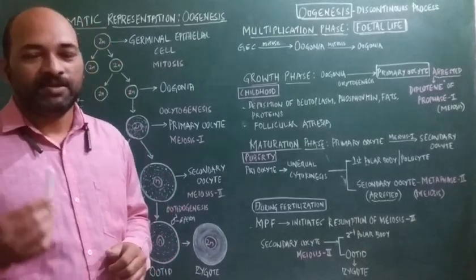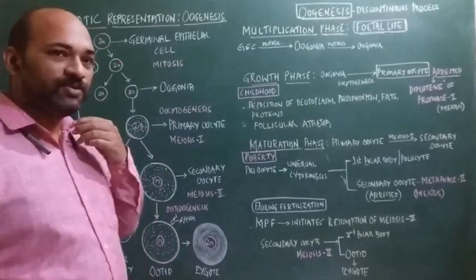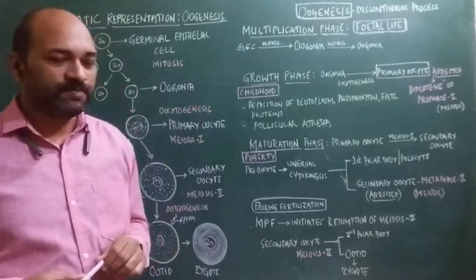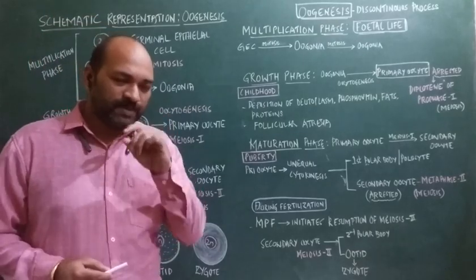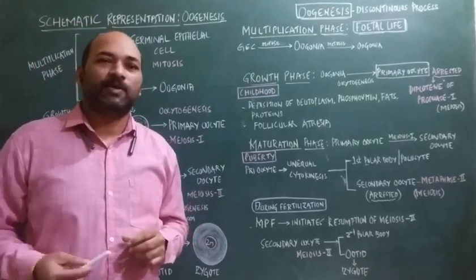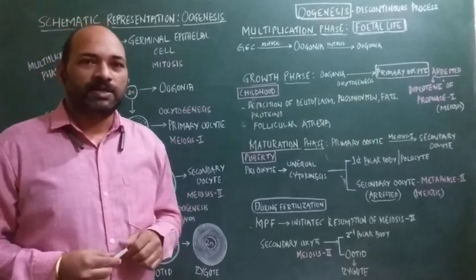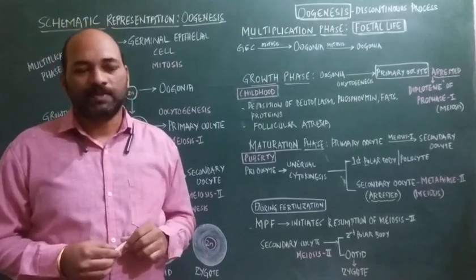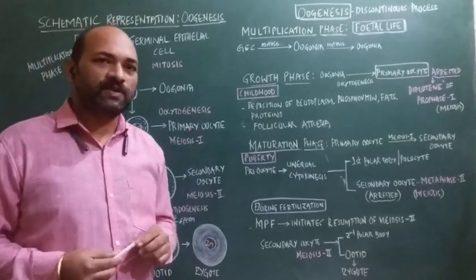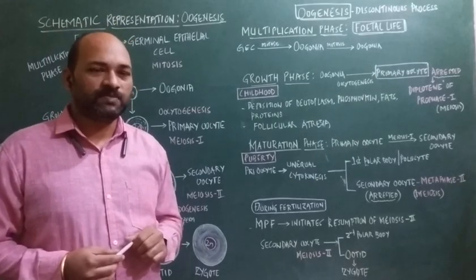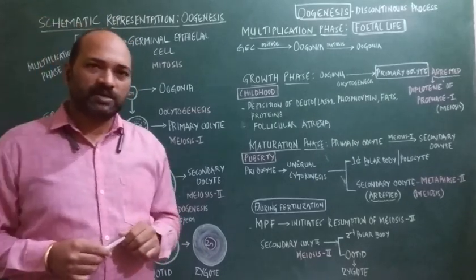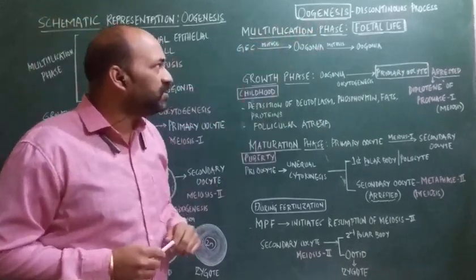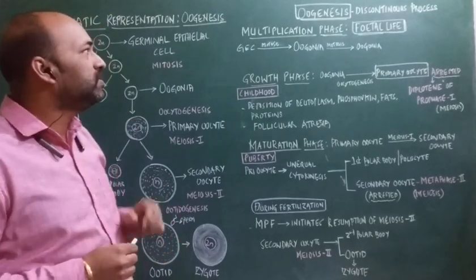Let's get started into today's video, which is all about oogenesis. Oogenesis is the process of formation of the haploid female gamete, ova, from the diploid reproductive cells called oogonia in the ovary. Oogenesis is totally different from spermatogenesis — spermatogenesis is a continuous process, while oogenesis is a discontinuous process.